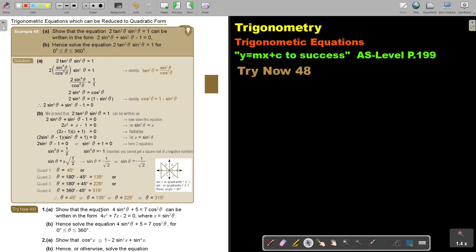Let's look at another example: trigonometric equations which can be reduced to quadratic form. Show that the equation 2 tan squared theta sin squared theta equals 1 can be written in this form.